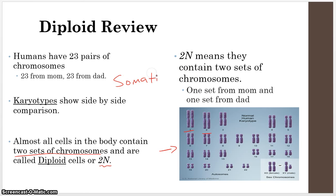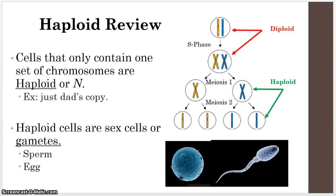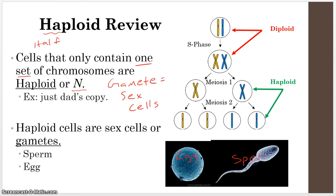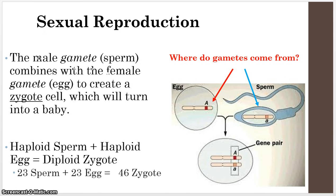Diploid cells are pretty much every cell in your body, every somatic cell. We also said that there are haploid cells — 'HA' sounds kind of like 'half' — and from that we said these cells only contain one complete set of chromosomes, called N. The only cells in your body that are haploid are what we call gamete cells, otherwise known as sex cells. So the egg and sperm are the only two cells in a human body that are haploid.